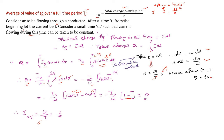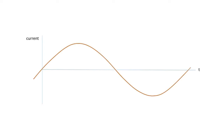We can also explain this by drawing a graph. The x-axis represents time and the y-axis represents current. The alternating current I = I₀ sin(ωt) is plotted, giving a sinusoidal curve. The peak value is I₀. The curve is symmetric: the first half of the time period (0 to T/2) is above the x-axis and the second half (T/2 to T) is below it.